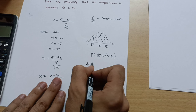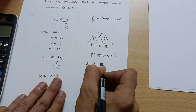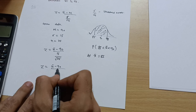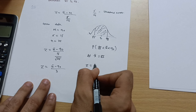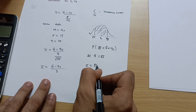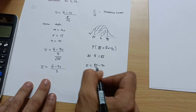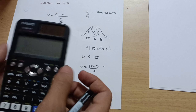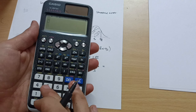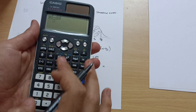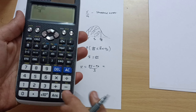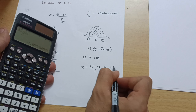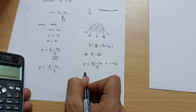First, at x̄ = 85, substitute into the formula: z = (85 − 90) / 3 = −5/3 = −1.66.